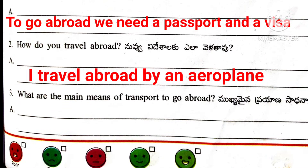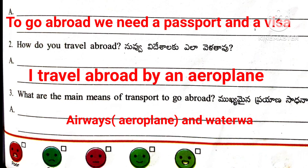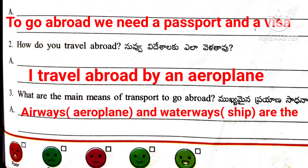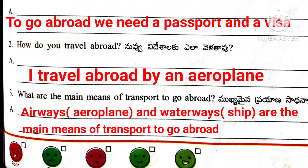Question number 3: What are the main means of transport to go abroad? Answer: Airways, that means aeroplane, and waterways, that means ship, are the main means of transport to go abroad.